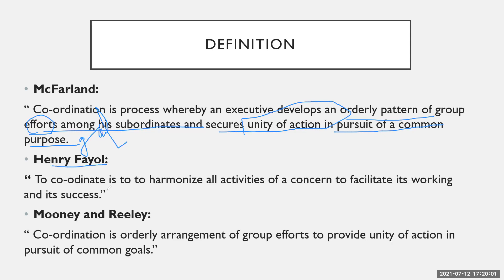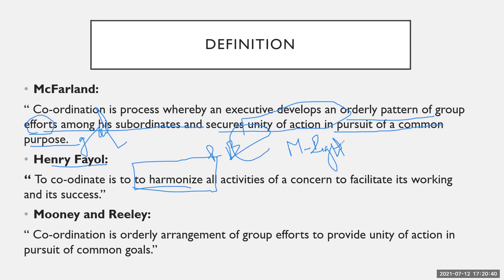Henry Fayol has also given the definition: To coordinate is to harmonize all the activities of a concern. We have to harmonize all the activities. For example, at the planning level, if we need to coordinate to decide the budget of the organization, then at the planning level, everyone is deciding the budget with the help of coordination. If we talk about staffing, then during staffing, management is placing the right person at the right job, because all employees and subordinates are coordinating with each other. In this way, coordination harmonizes all the activities of the concern to facilitate the success of the organization.